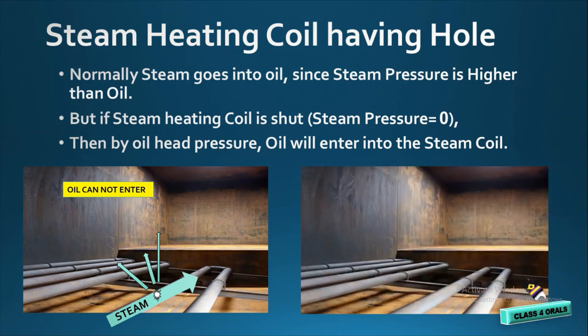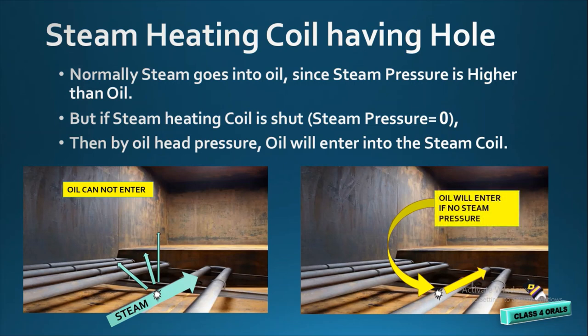But if the steam heating coil is shut, that means the steam pressure is zero. Now, by the oil head pressure, the oil can easily enter into the steam heating coil. That means the oil will enter if there is no steam pressure, and oil will find its way to the hot well. This is how the oil will enter into the hot well or cascade tank.